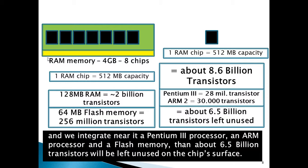Please observe: total transistor count is 8.6 billion. 128 MB RAM untouched means approximately 2 billion transistors. A Pentium 3 Tualatin processor equals 28 million transistors. An ARM2 processor has 30,000 transistors. 64 MB flash memory needs 256 million transistors. After accounting for all of these, about 6.5 billion transistors will be left unused.